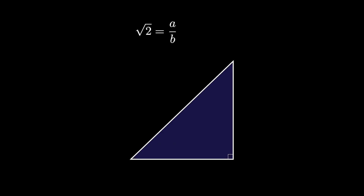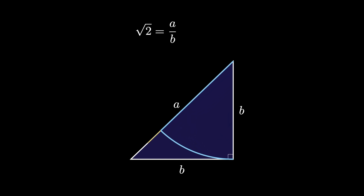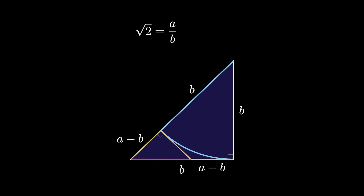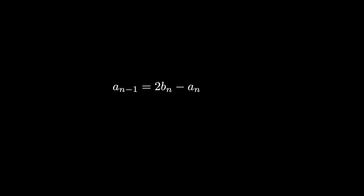If we investigate the visual proof that the square root of 2 is irrational a little bit more, we can get an interesting deeper result about number theory related to the square root of 2 and its approximations. When we investigated the proof, we saw that we could replace the numerator a with 2b minus a, and the denominator b with a minus b. So we can think of this as a backwards recurrence relation, where a_(n−1) = 2b_n − a_n and b_(n−1) = a_n − b_n.